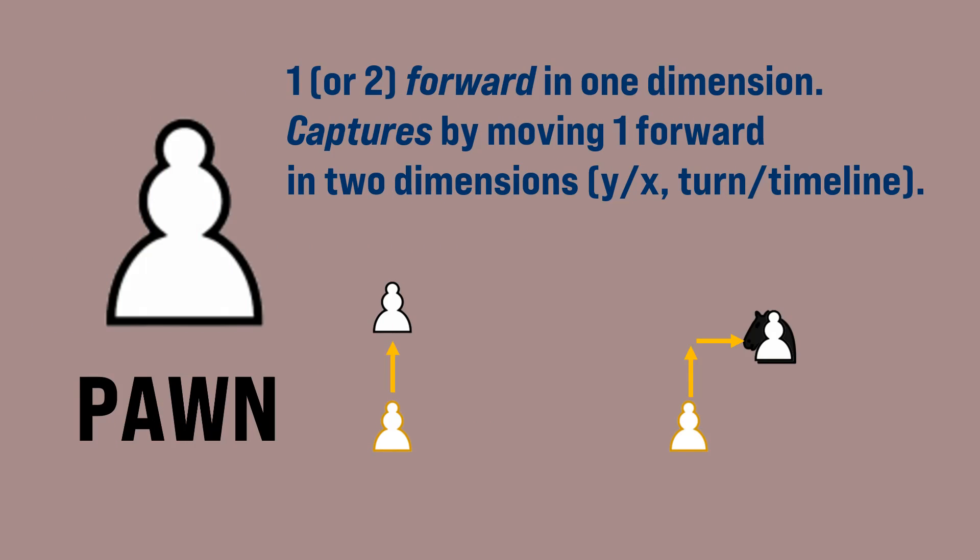Finally, the pawn moves one forward in one dimension, but it can move two forward if it hasn't yet moved. Here we have the pawn moving one forward. Remember that the X dimension does not have a forwards, so you can only move forward in the Y, turn, or timeline dimensions.